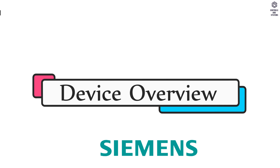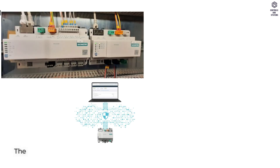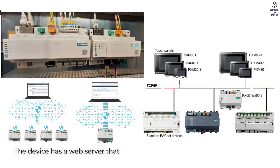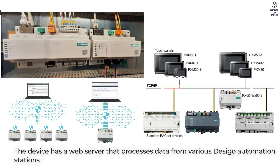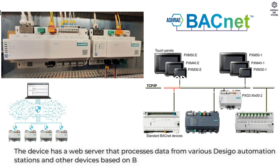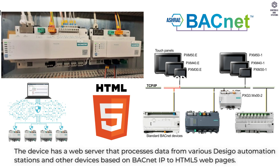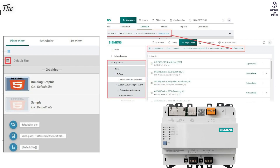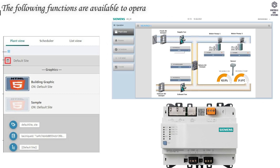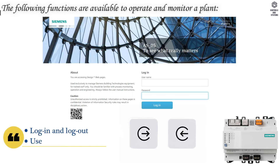Device Overview: The device has a web server that processes data from various Desigo automation stations and other devices based on BACnet IP to HTML5 web pages. The following functions are available to operate and monitor a plant: login and logout,